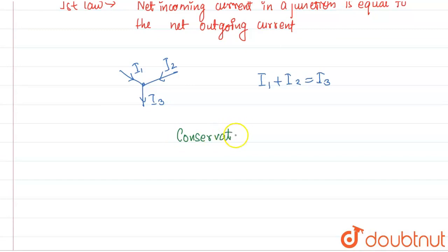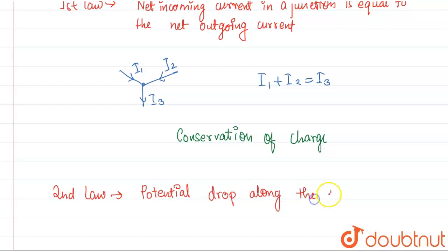And when we talk about the second Kirchhoff's law, the second law states that the voltage, or you can say potential drop, along the components of a loop must be equal to zero.